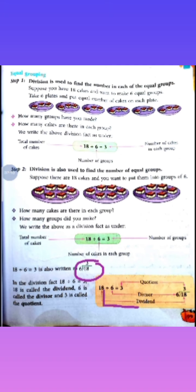18 divided by 6 is equal to 3, and this can also be written in another way. So, in the division fact 18 divided by 6 equals 3: 18 is called the dividend, 6 is called the divisor, and 3 is called the quotient — means jo hamaara answer find out hota hai, usko hum quotient bolte hain.